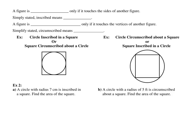On to some new ideas. A figure is inscribed only if it touches the sides of another figure. Here's an example: a circle inscribed in a square just barely touches the sides of the other figure. So essentially, inscribed means it's on the inside. A figure is circumscribed only if it touches the vertices of another figure — circumscribed means it's on the outside.